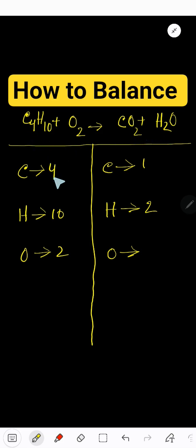On the left hand side we have 4 carbon, then 10 hydrogen, 2 oxygen. On the right hand side we have 1 carbon, then 2 oxygen, then 2 hydrogen. Here we have 1 more oxygen, so totally we have 3.